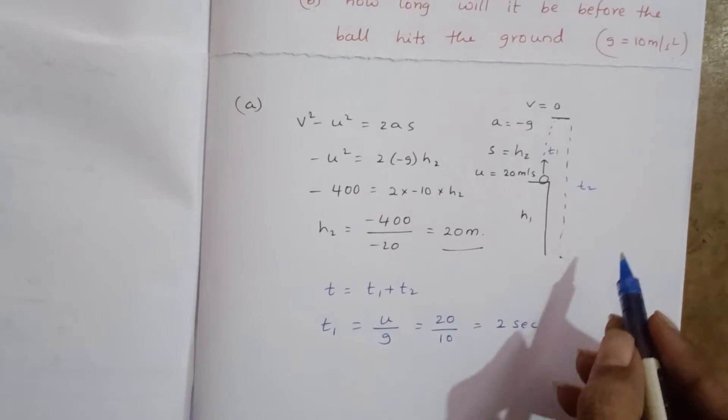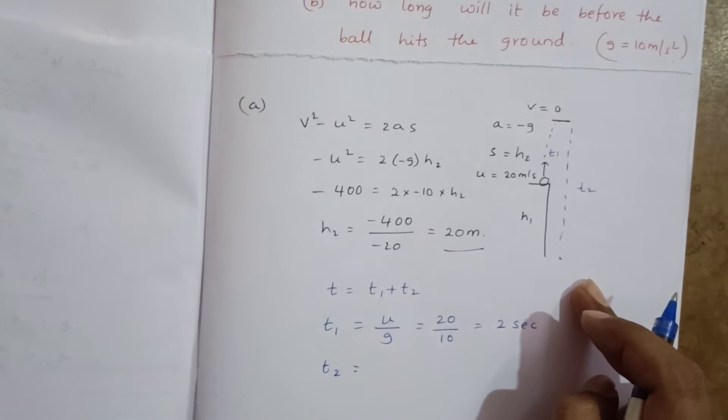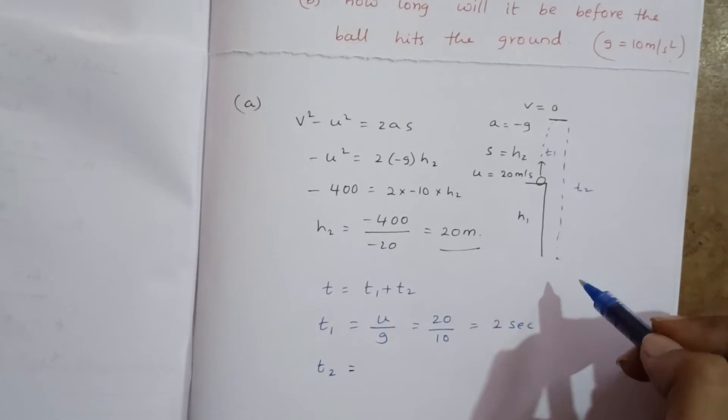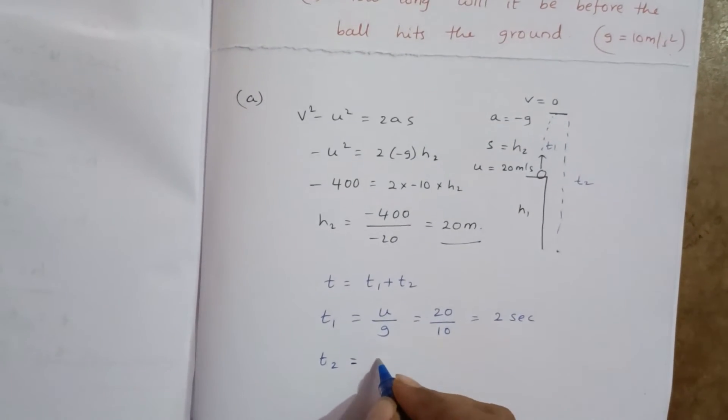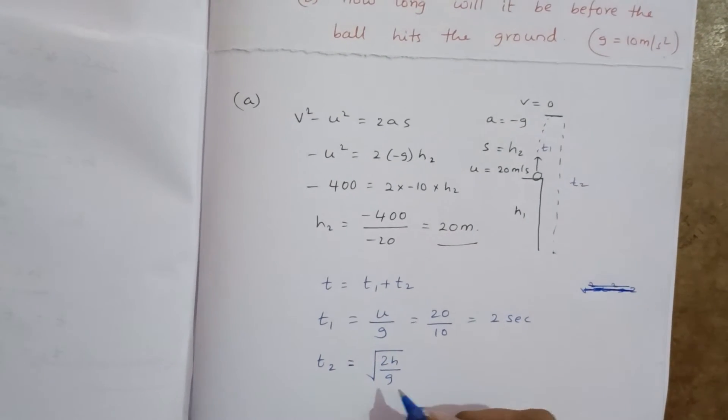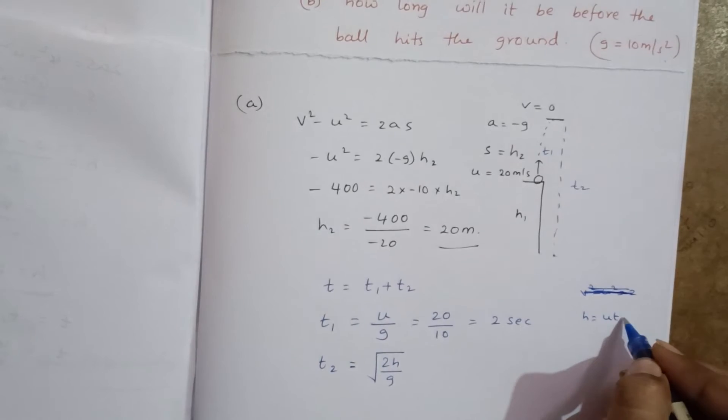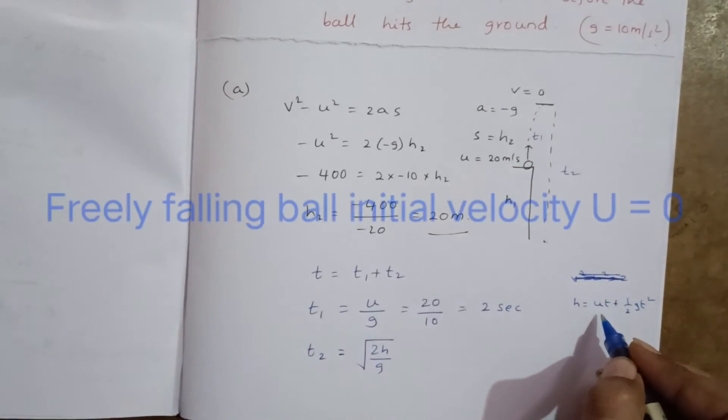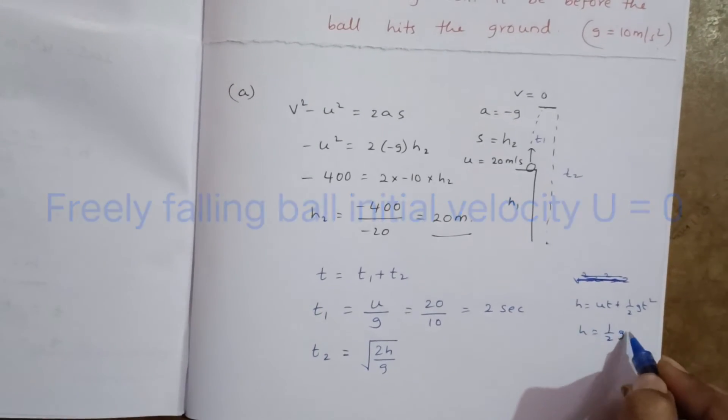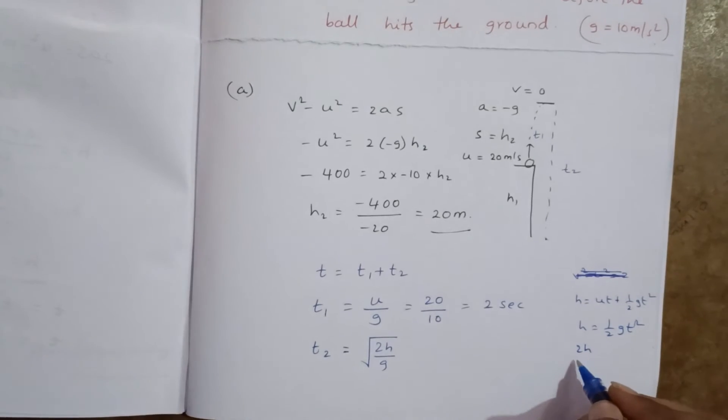Next, t₂, it is coming down, so we can find the time while freely falling. Time equal to square root of 2h by g. It is taken from h equal to ut plus half gt squared. So initial velocity is 0, ut becomes 0. H equal to half gt squared, t² equal to 2h coming this side, g coming this side by g.